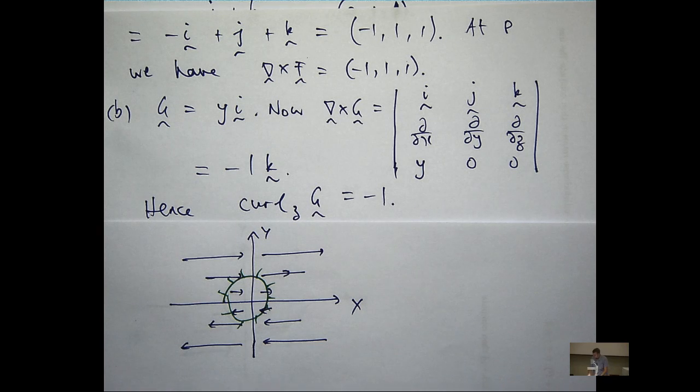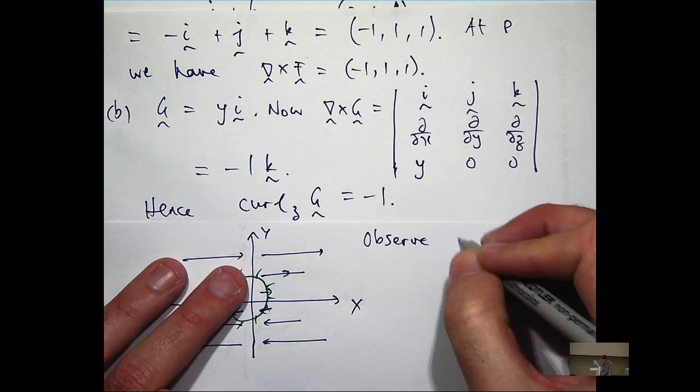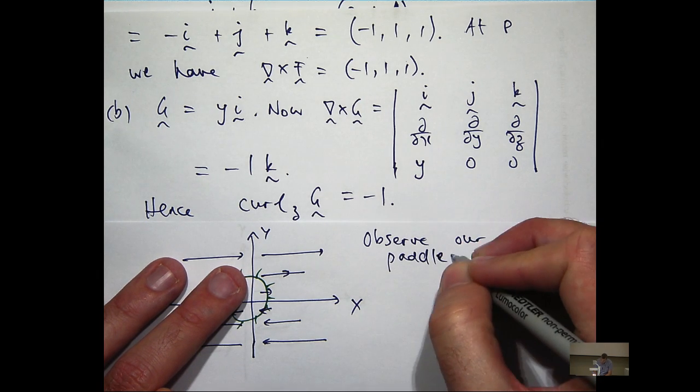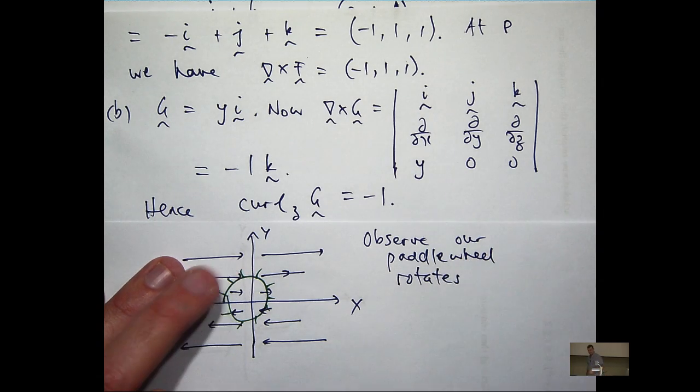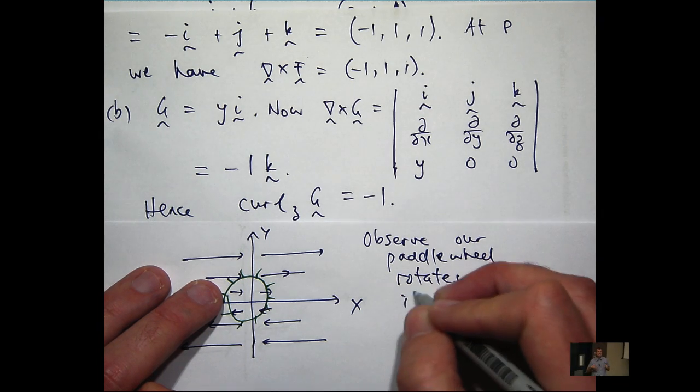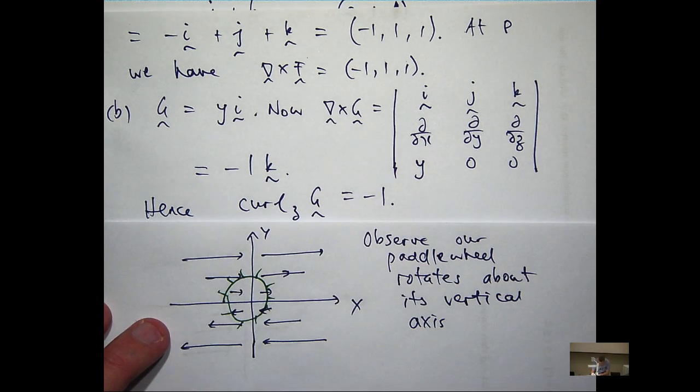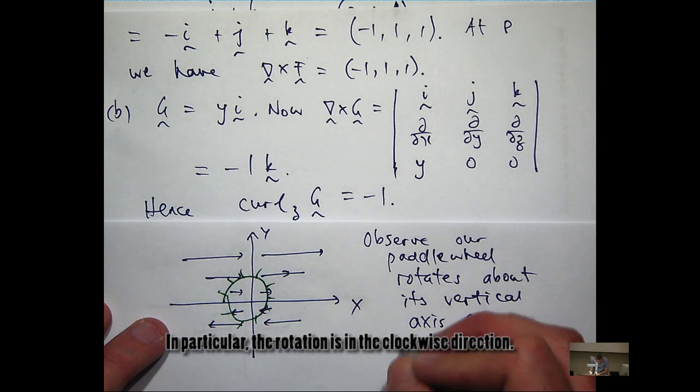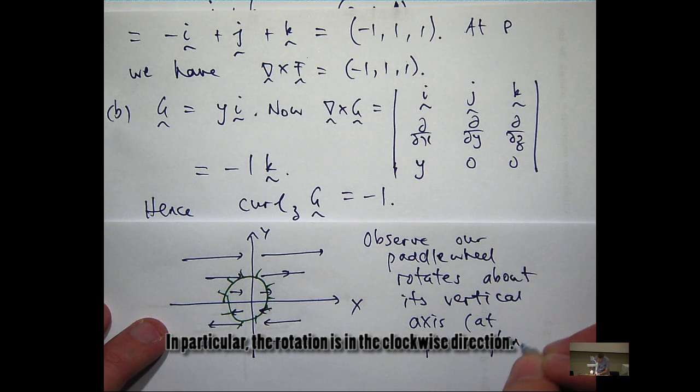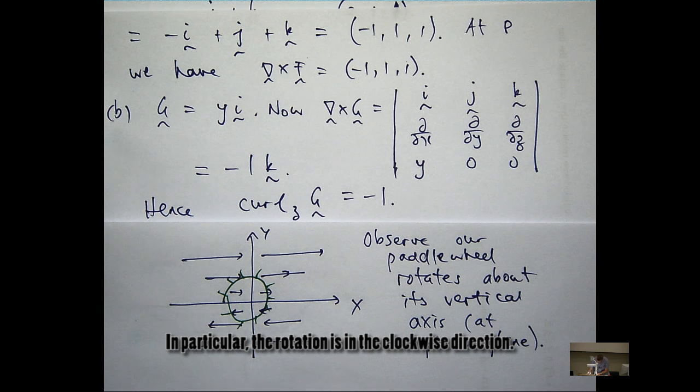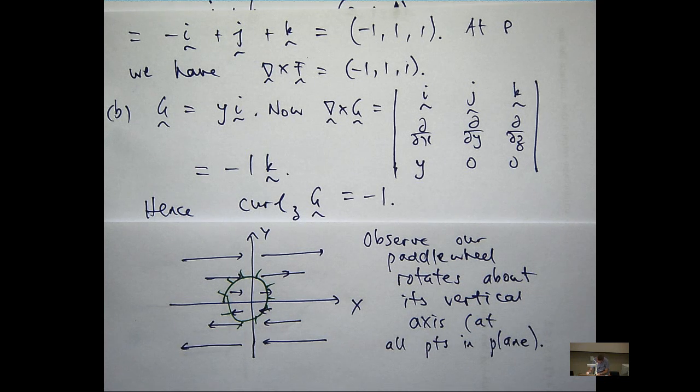Observe our paddle wheel rotates about its vertical axis. Not only here, but you can move this around and you're still going to get that rotation. So it kind of confirmed what we already knew because we calculated the scalar curl - it was negative one everywhere. But it's good to actually physically see something to confirm that.